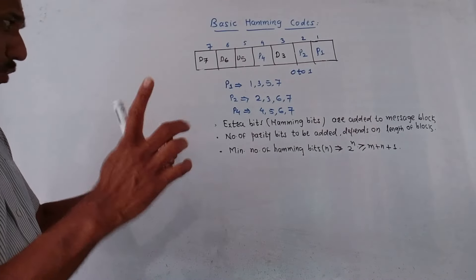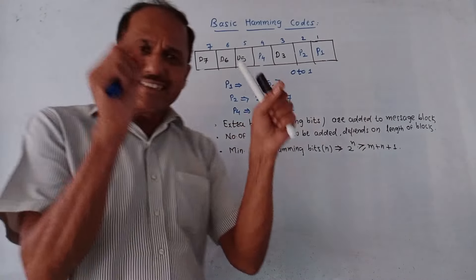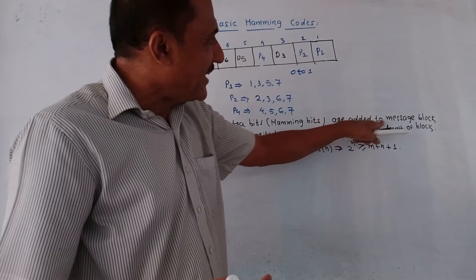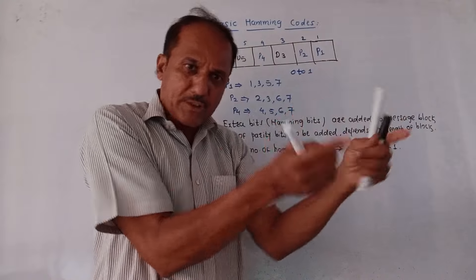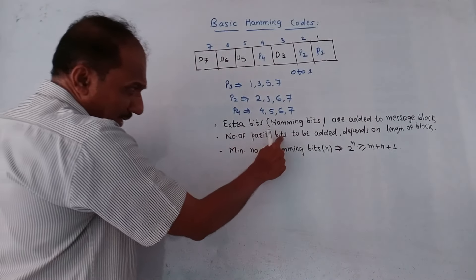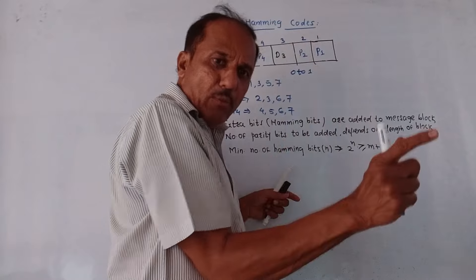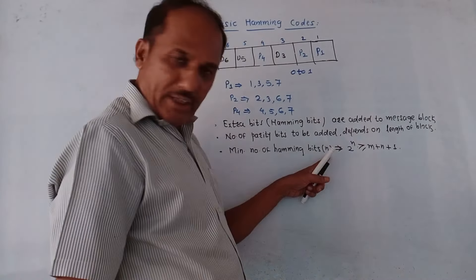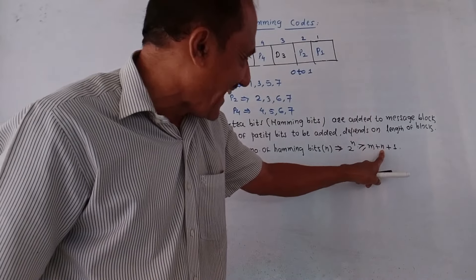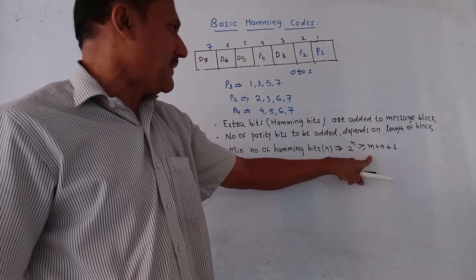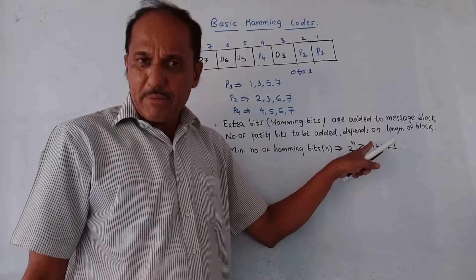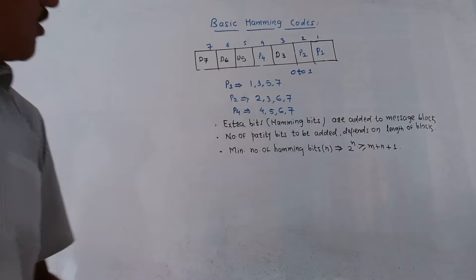In Hamming codes, certain extra bits called Hamming bits are added to the message block. The message block contains its own information bits plus these extra Hamming bits. The number of parity bits to be added depends on the length of the block. The minimum number of Hamming bits is represented by n, where m represents the total number of bits. This is the basics of Hamming code.